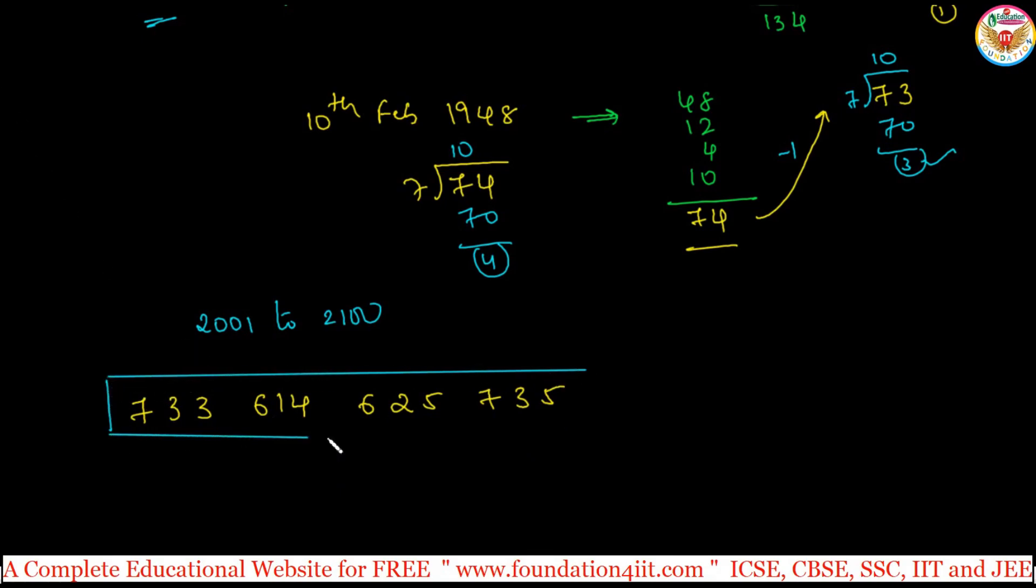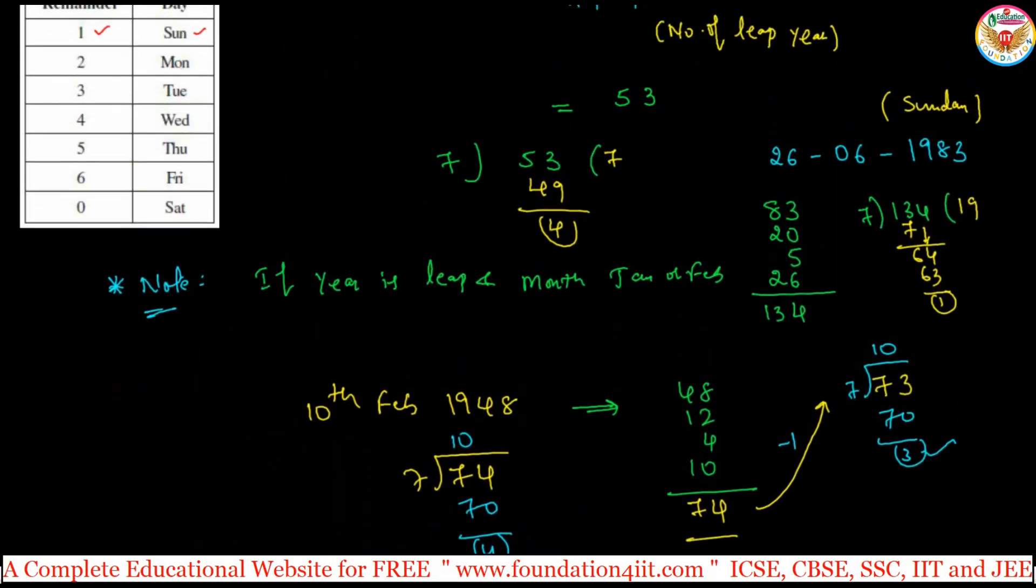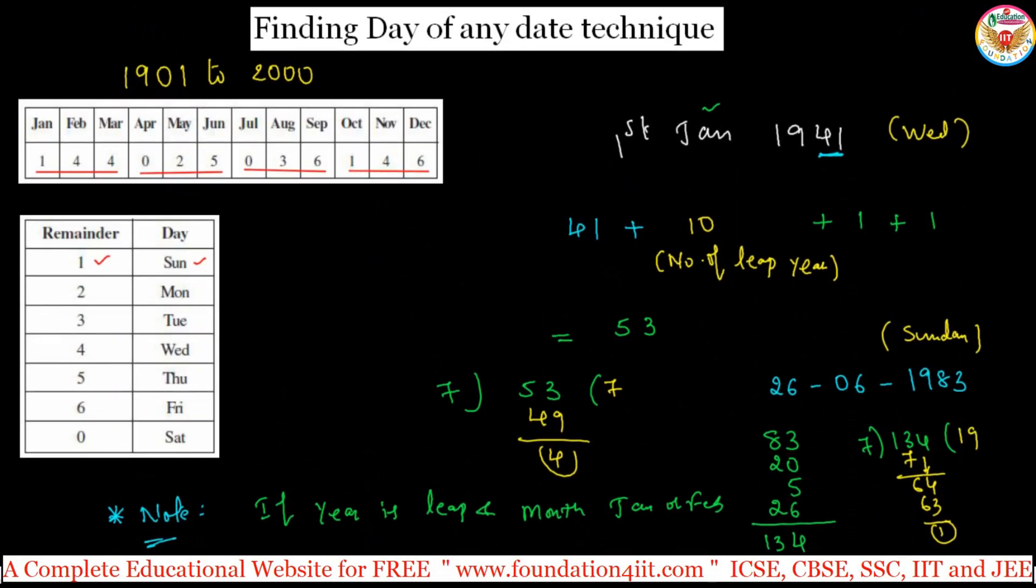In case the year is between 2001 to 2100, this is for January, February, March, April, May, June, July till December. Same pattern you can apply: that year, number of leap years, add the month code and date, and divide by 7. This is the technique for finding the day of any date.